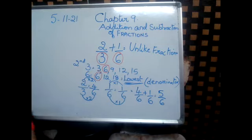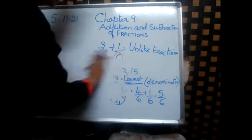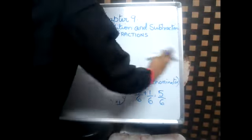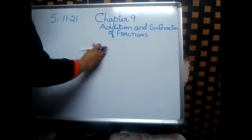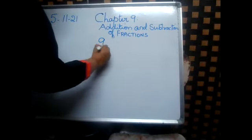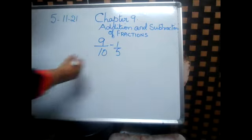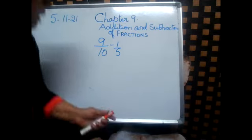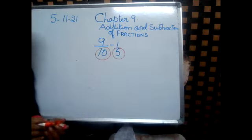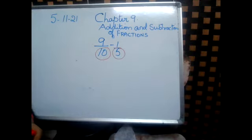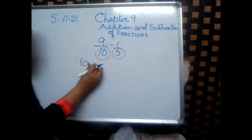Now, I will give you one sum for subtraction. That is 9 by 10 minus 1 by 5. The first step is to circle your denominators — they are both different: 10 and 5. By circling them.